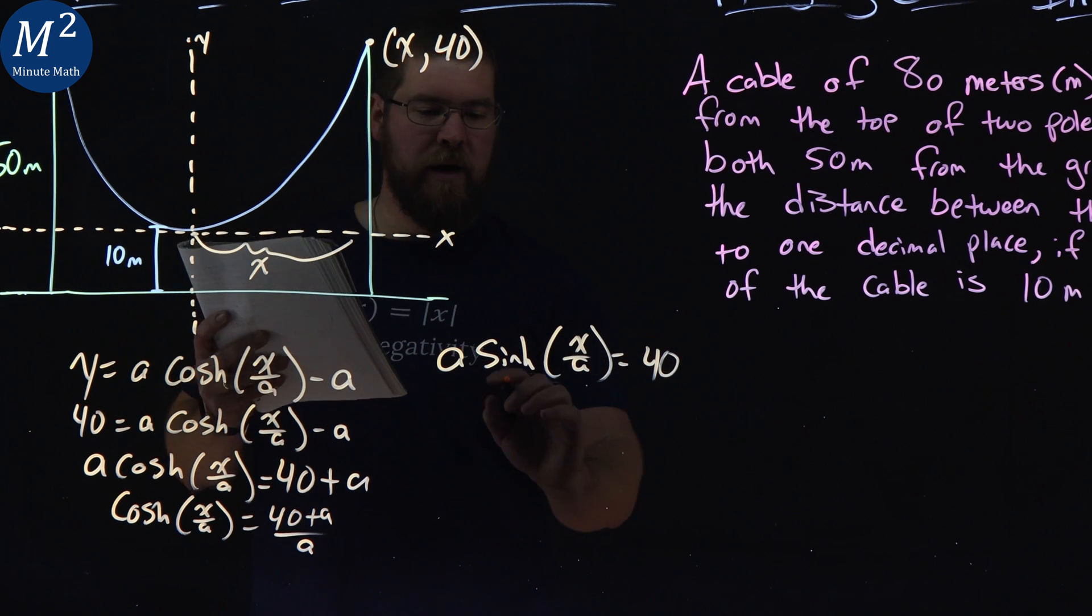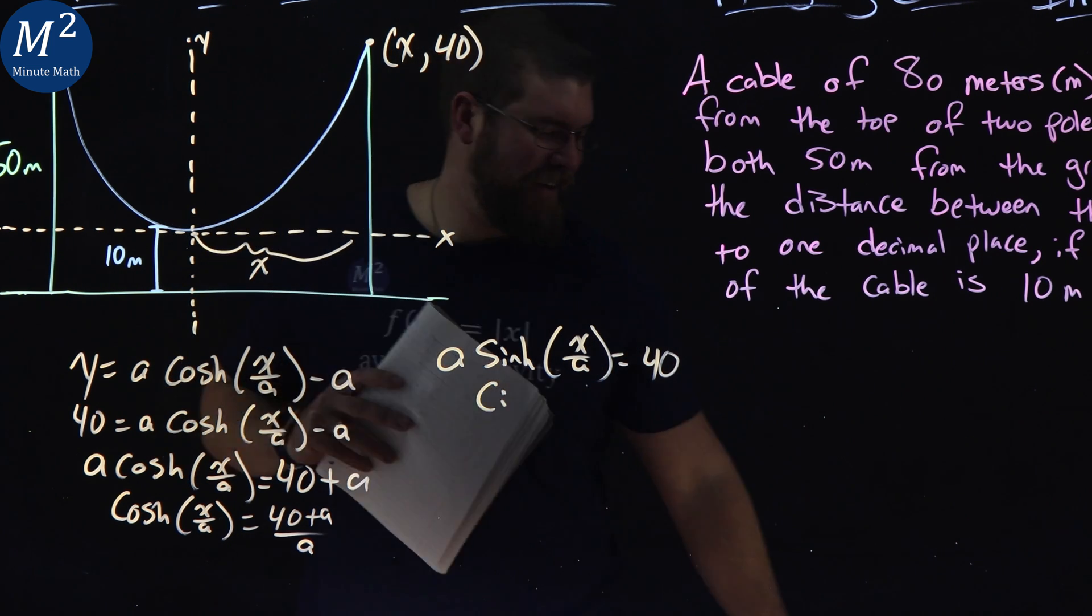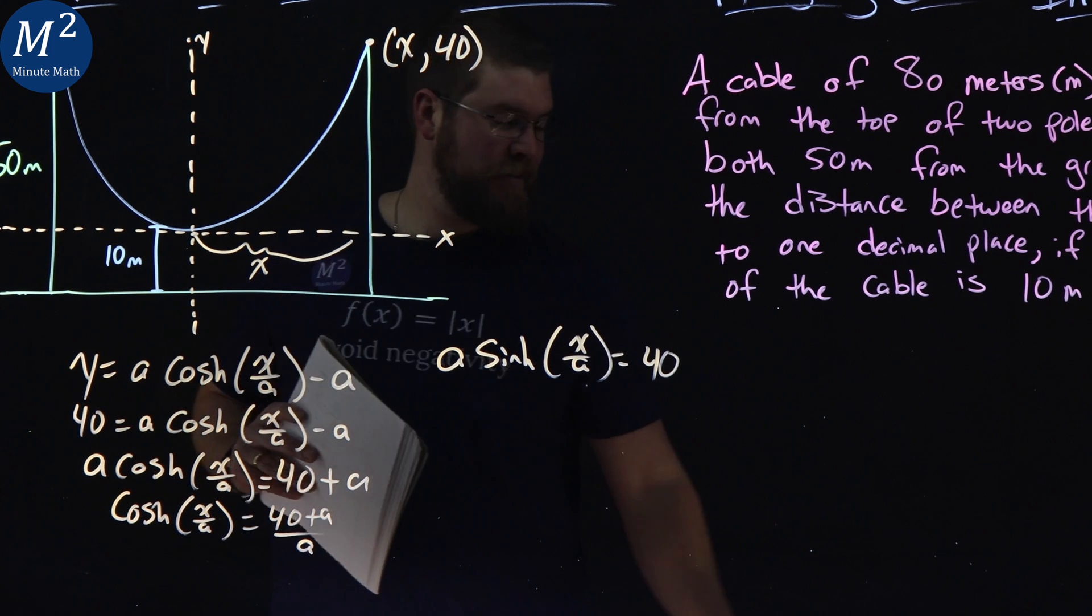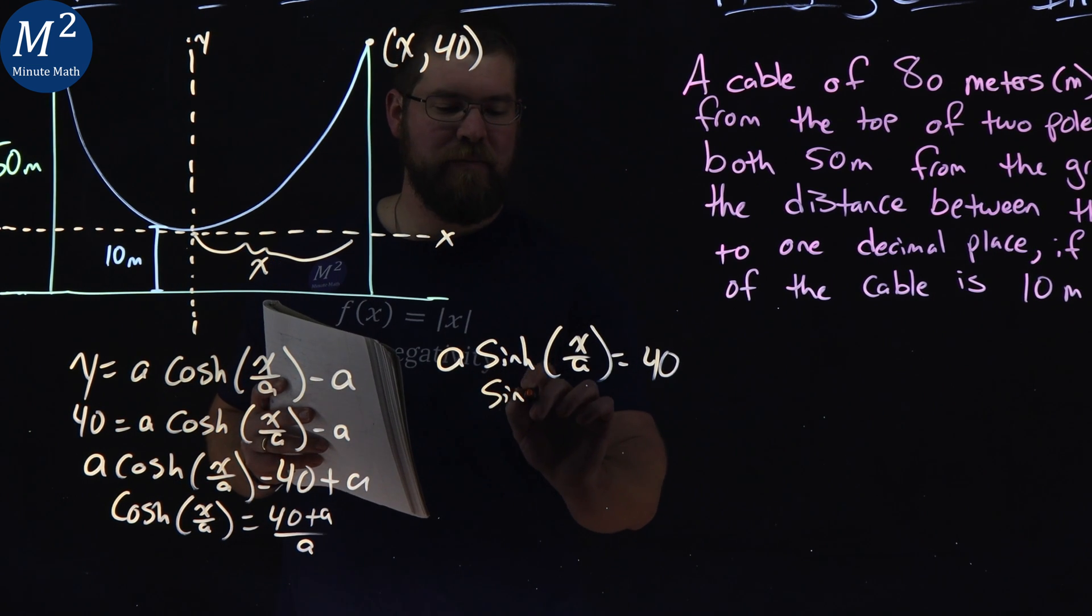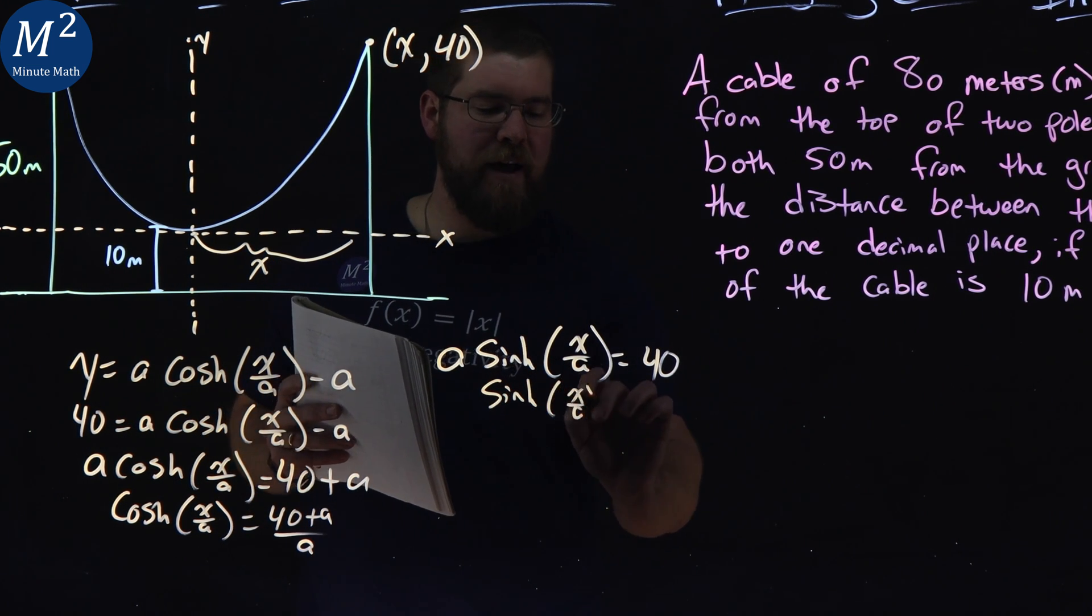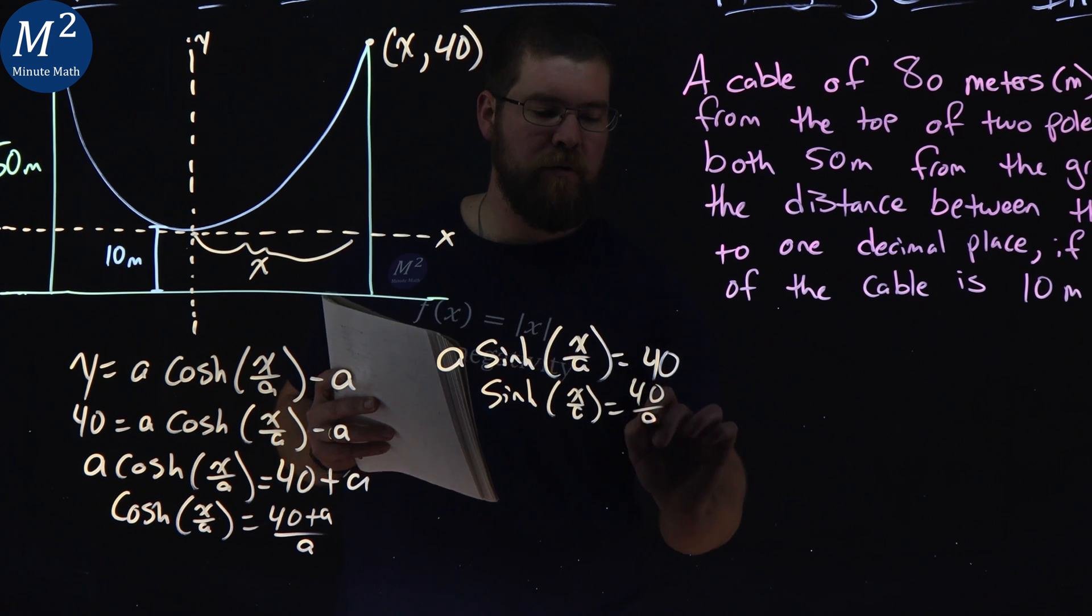From there, divide both sides by a. And we have sinh of x over a equals 40 over a.